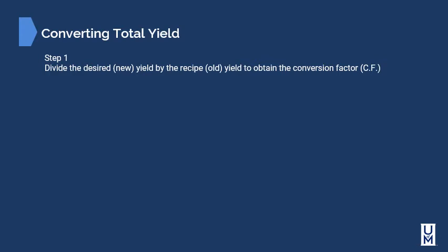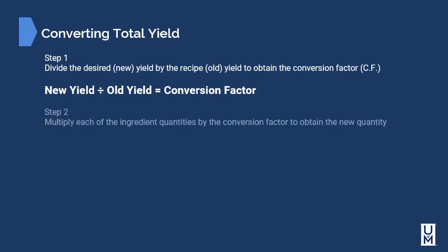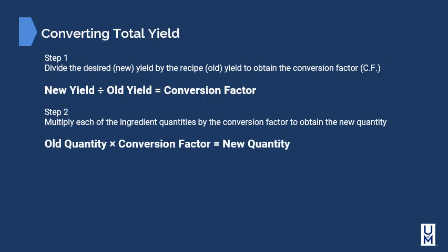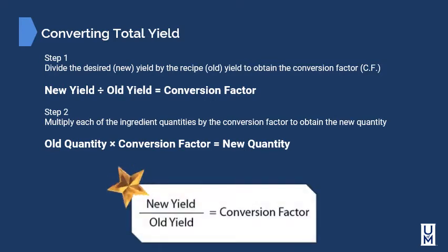Step 1: Divide the desired (new) yield by the recipe (old) yield to obtain the conversion factor. We take our new yield, divide it by our old yield, and that gives us our conversion factor. Step 2: Multiply each of the ingredient quantities in the recipe by the conversion factor to obtain the new quantity. Old quantity times conversion factor equals new quantity.